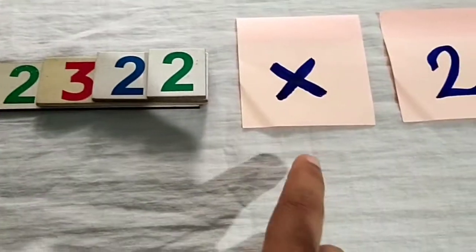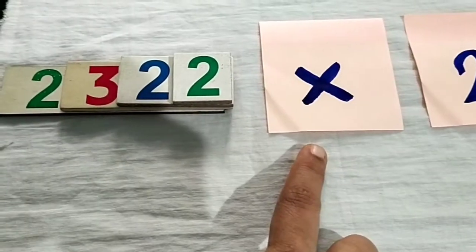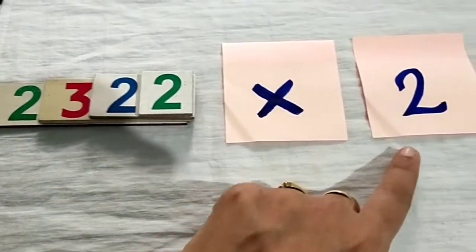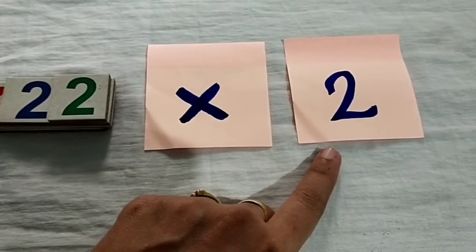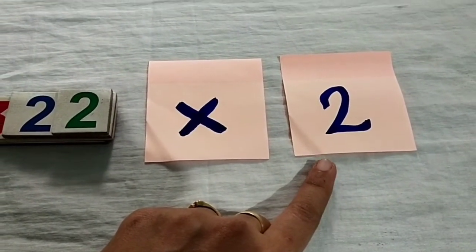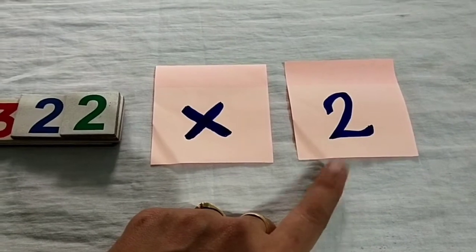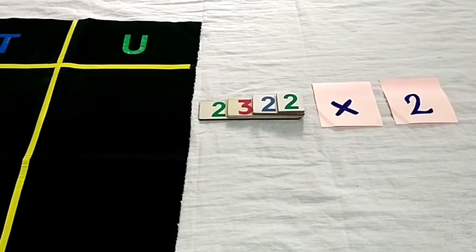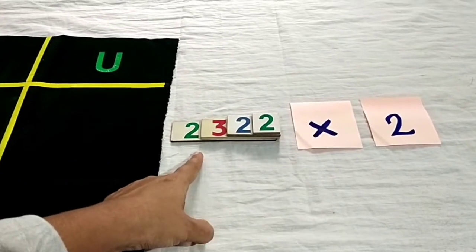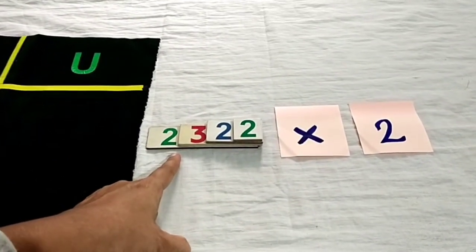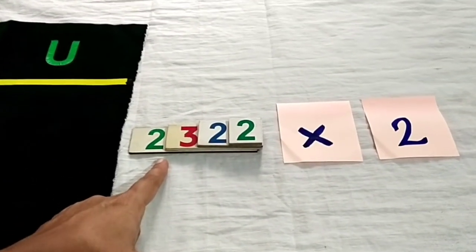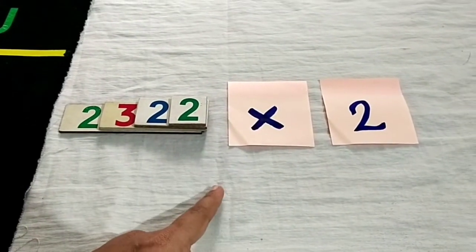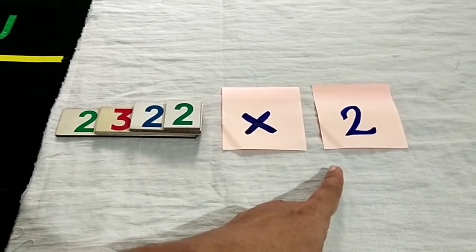This is the multiplication symbol. The multiplier is two. Two is the multiplier.